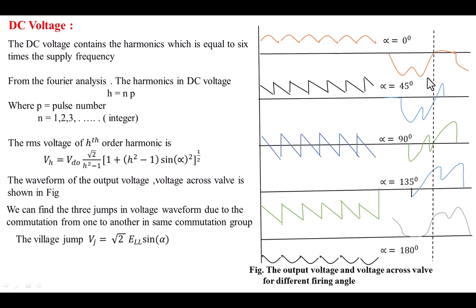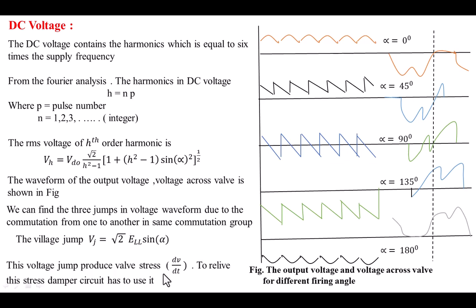If we observe the voltage across the load, we can find three jumps in the output voltage. These jumps in voltage occur due to the commutation of devices within the same commutation group. The magnitude of all these jumps is approximately equal, given by VJ = √2 · ELL · sin α. Because of these jumps in voltage, stress is developed across the valve. We relieve that stress by using a damper circuit across the valve.